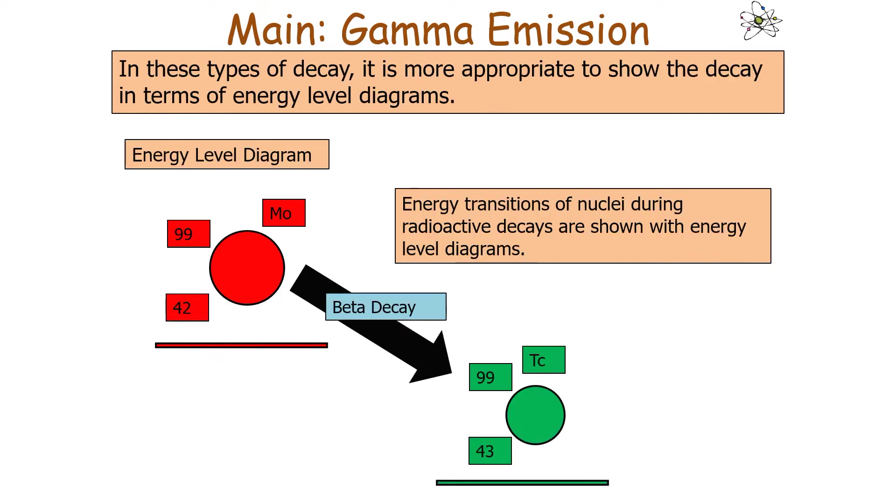In these types of decays, it's more appropriate to show the decay in terms of energy level diagrams. Energy transitions of nuclei during radioactive decays are shown with energy level diagrams.